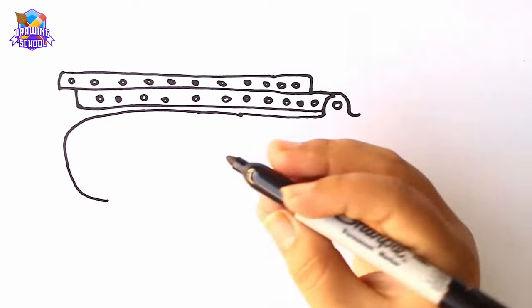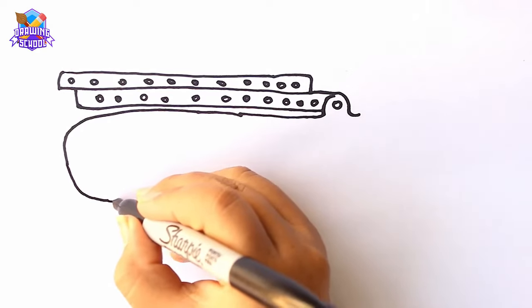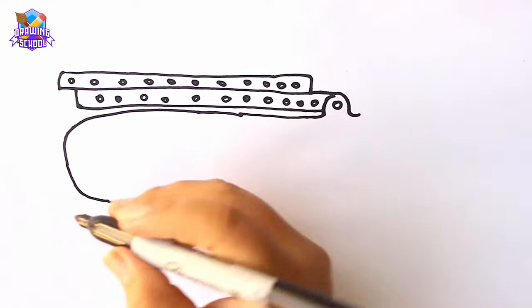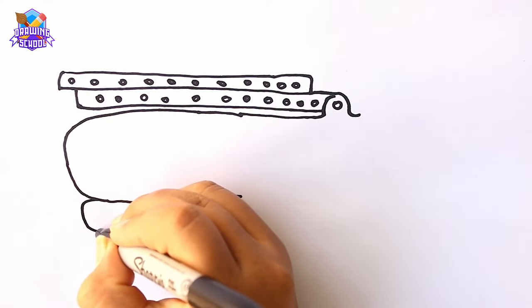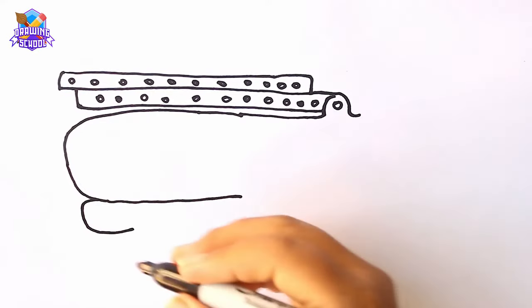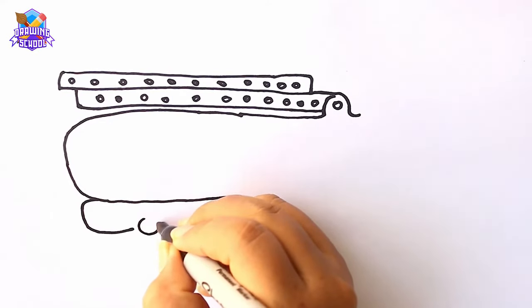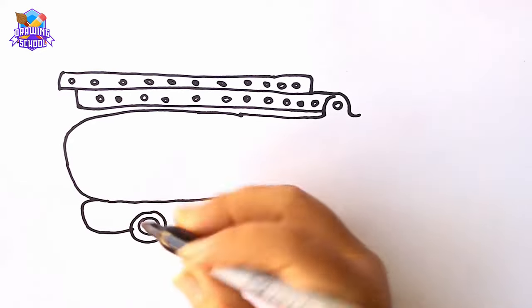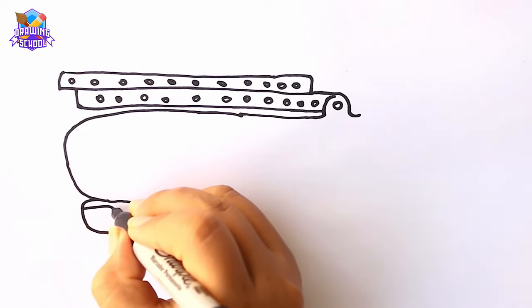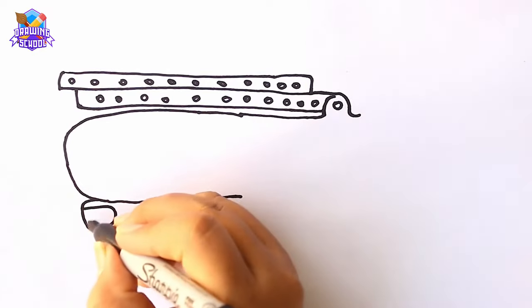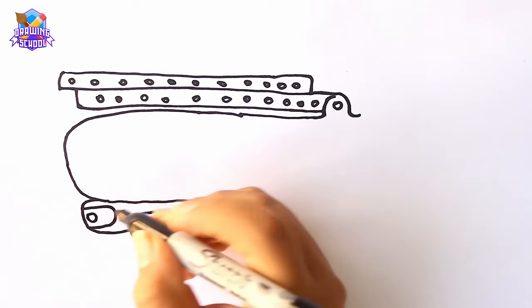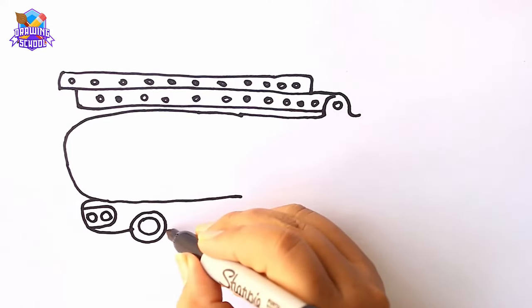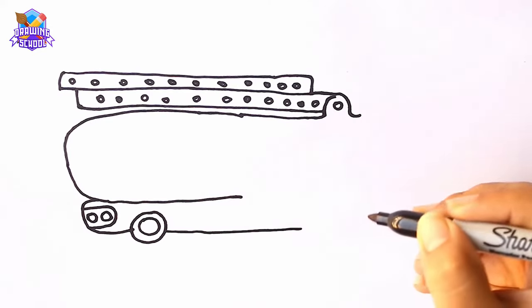Now we will continue with the bottom part, like the tires. Some details too, like lights. And now we will go on to the next tire to complete the front part.